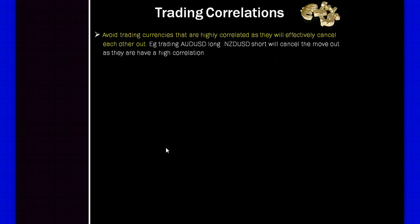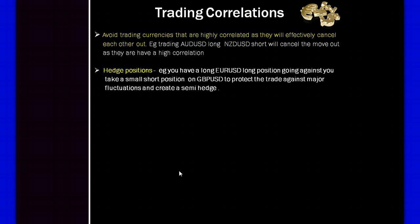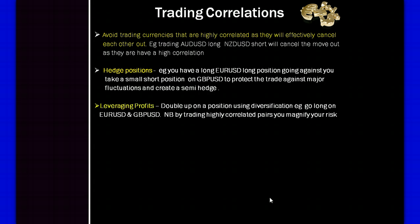How do you trade correlations? One key principle is to avoid trading currencies that are highly correlated, as they will effectively cancel each other out. For example, if you take the Aussie/US dollar long and the New Zealand/US dollar short, you cancel the moves out due to their high correlation. If you want to hedge, say you're going long on the Euro/US dollar and the position is going against you — you could take a small short on the pound/US dollar in the opposite direction to create a semi-hedge. If you want to leverage your profits, instead of two positions long on the Euro/US dollar, you can go one Euro/US dollar and one pound/US dollar, both long and highly correlated.